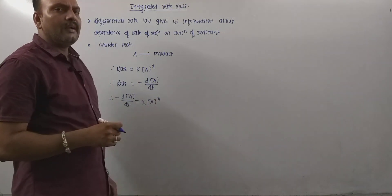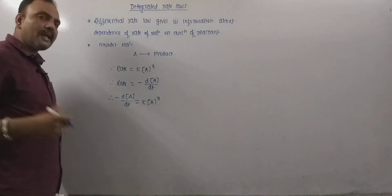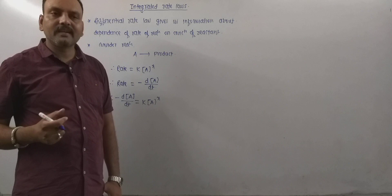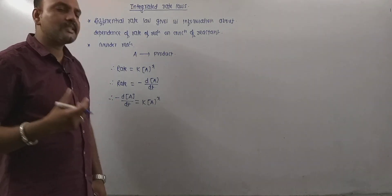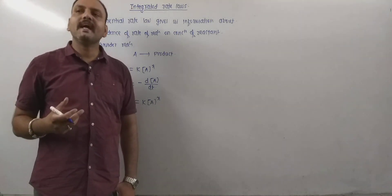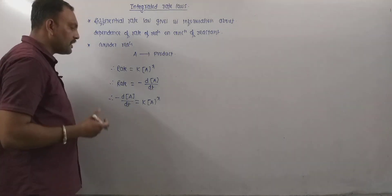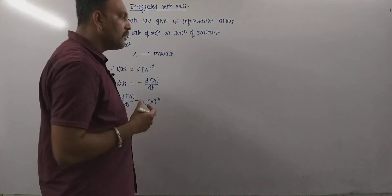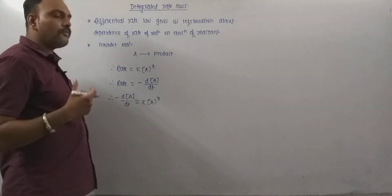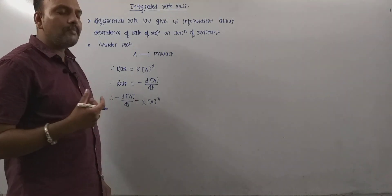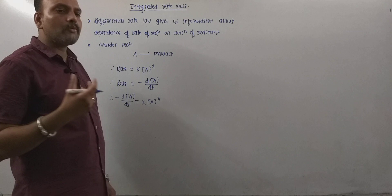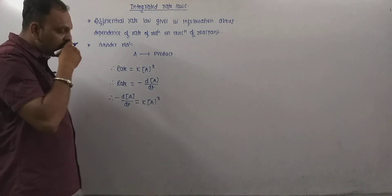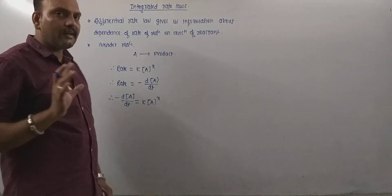By comparing these two expressions, one can write: minus d[A]/dt = K into concentration of A to the power X. This is the differential rate law. Using this equation, we can understand that the rate of reaction depends on the concentration of reactant A — the differential rate law tells us which reactant is going to affect the rate.